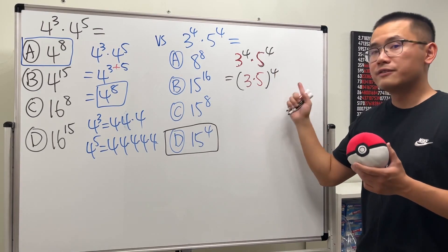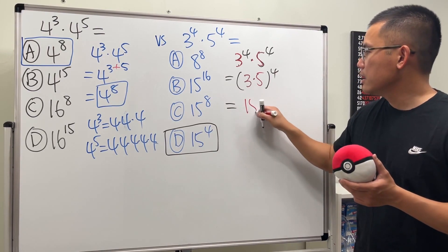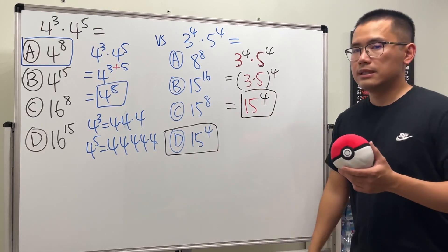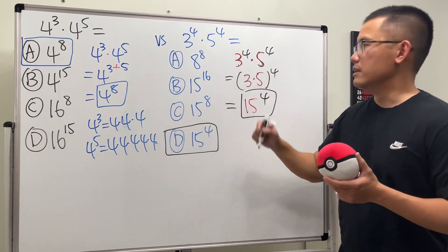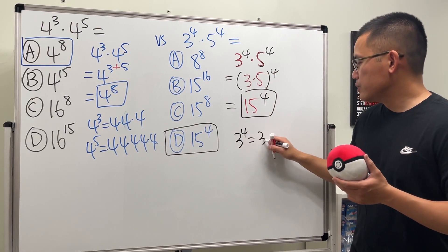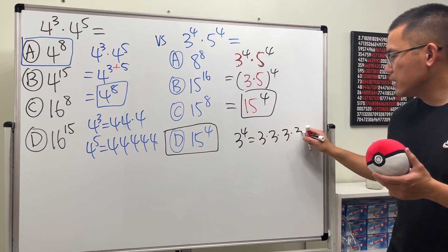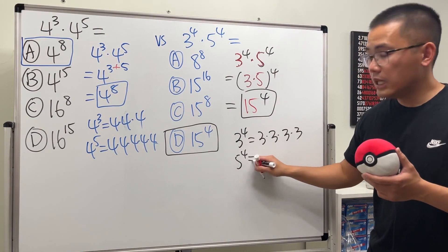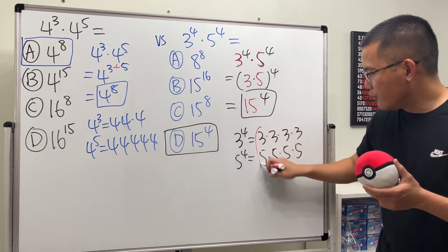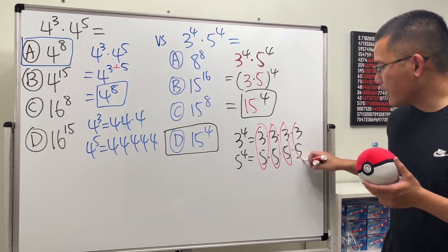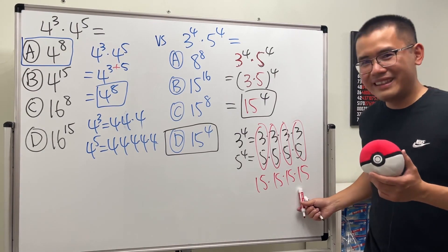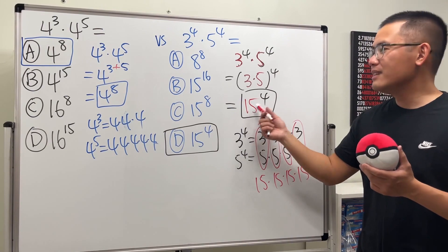Once we have 3 times 5 inside, this is just going to be 15 raised to the 4th power — that's why the answer is D. To show you why this is correct: 3 to the 4th power means 3 times 3 times 3 times 3, and 5 to the 4th power means 5 times 5 times 5 times 5. If you pair them up, we get 15 times 15 times 15 times 15, and that's exactly why we have 15 to the 4th power. Pretty cool!